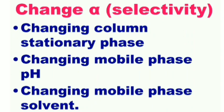Next is change alpha selectivity. You can change selectivity by changing the column stationary phase, changing mobile phase pH, and changing mobile phase solvent.